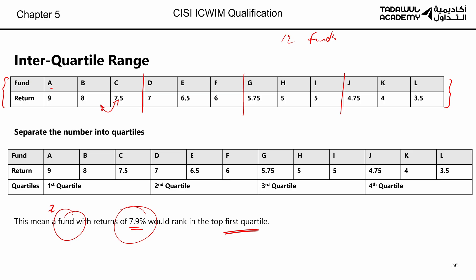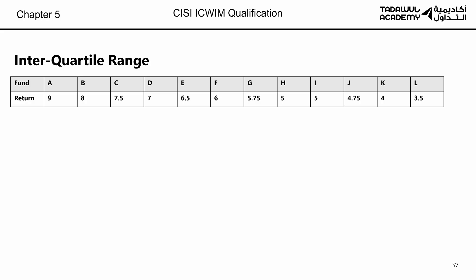The first thing to keep in mind: if CISI asks you to calculate the interquartile range, they will no longer give you an even number of investments — they'll give you an odd number, such as 13, 11, 15, or 17 funds. This is because to calculate the interquartile range you need to find the median, which is the number in the middle of the set. Here we have investments A to L — 12 funds — but in the exam CISI will give you an odd number, probably 13.